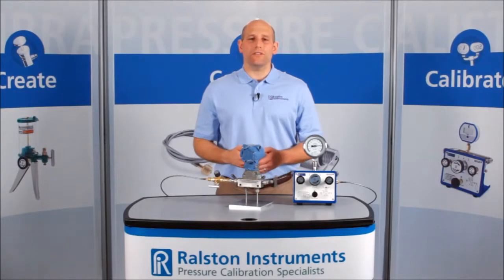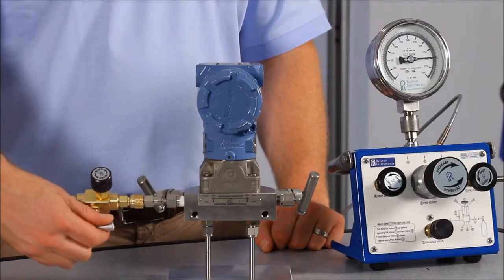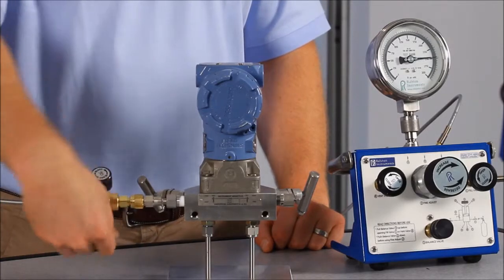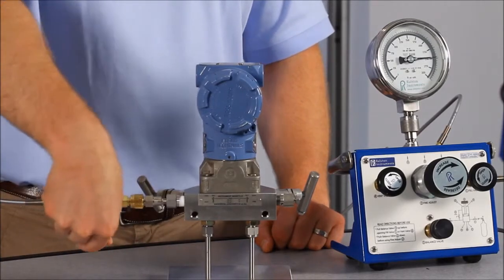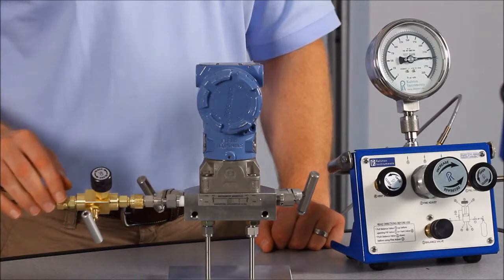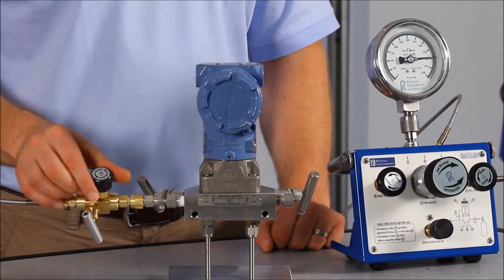When you're done testing this device, you can simply close the isolation valve to block your pressure source from the device under test. Then open the vent valve to release the pressure between the isolation valve and the device under test.